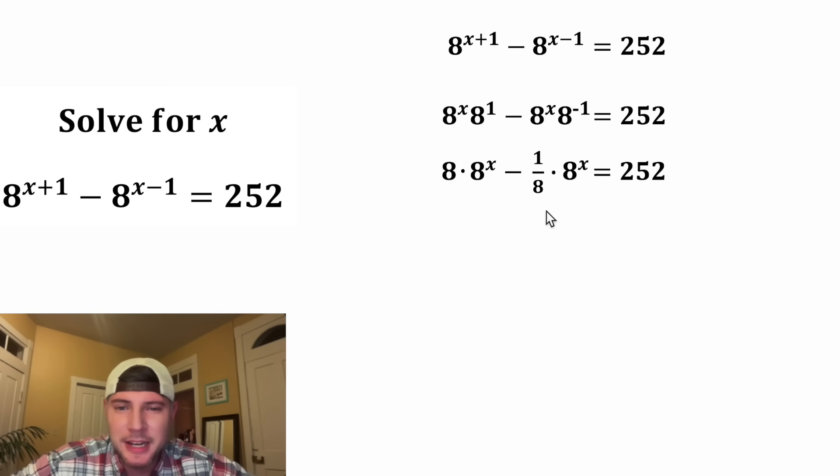Now we have this term minus this term. Each of these terms contains 8 to the power of x. So let's factor out 8 to the power of x. Now we need to ask ourselves, 8 to the x times what will give us this first term?